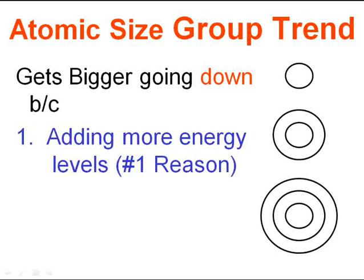This is called the atomic size group trend. Groups are my vertical columns, so a group trend is what happens to my atom as I go down a group from top to bottom. As I saw on the previous slide, the atoms get bigger going down. The number one reason is because we are adding more energy levels. These layers on my electron cloud are energy levels — energy level one, one and two, and as I go down to the next, one, two, three — I'm continuing to add more energy levels. My atom is clearly getting bigger simply by adding more energy levels.